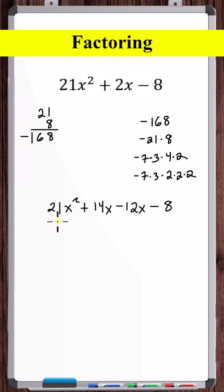So let's factor out a 7x from these two terms, and let's factor out a minus 4 from these two terms. So now let's factor out a 3x plus 2, and that's fully factored.